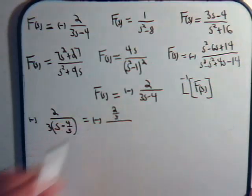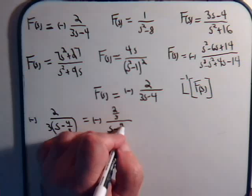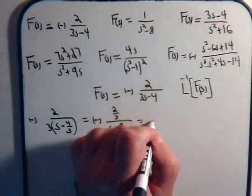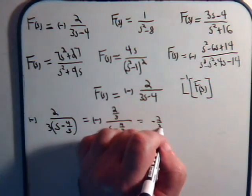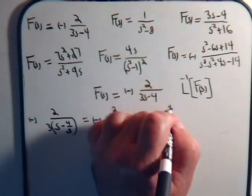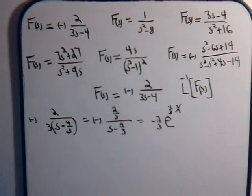And we can rewrite it like this: minus 2 thirds up here over s minus 4 thirds. Now it should be pretty obvious what this is equal to. Here then, this is going to be minus 2 thirds times e to the plus 4 thirds x. So that should be it for that one.